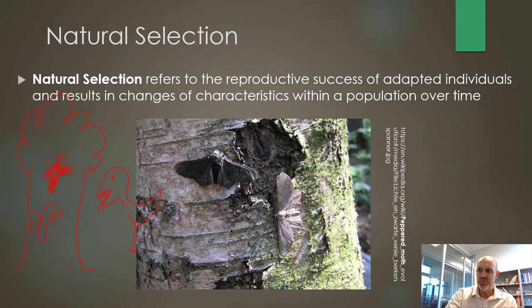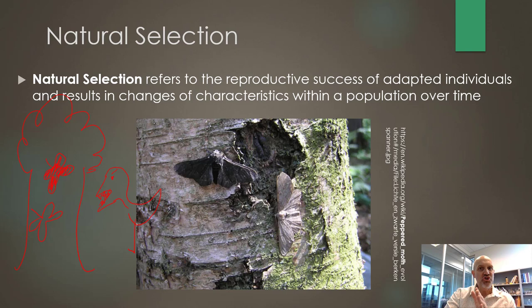You end up with a lot of white moths but not many black moths. White moths reproduce with white moths and produce white offspring. The black color gets selected against and the white color gets selected for. That's what it means by reproductive success of adapted individuals — the white moth didn't do anything to be adapted, it just was, and as those white moths reproduced, that white color got passed down.